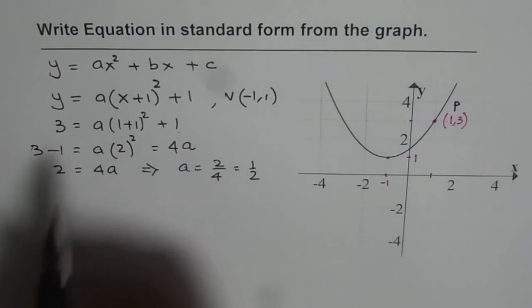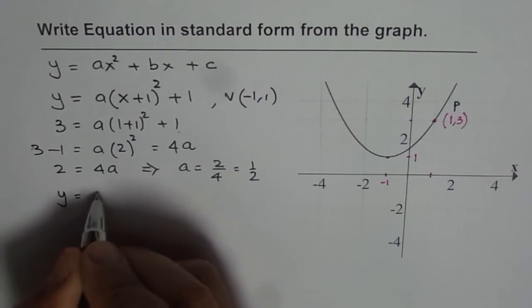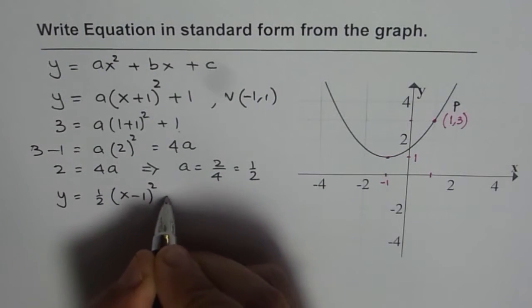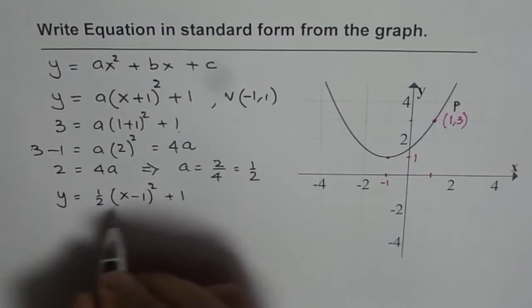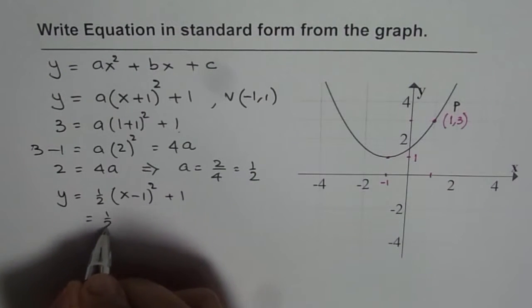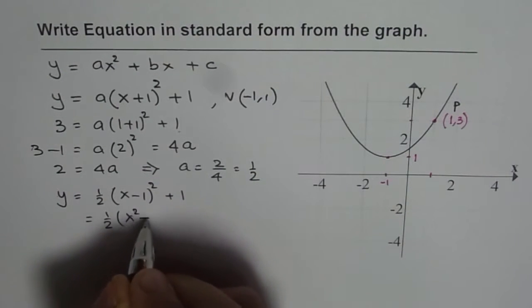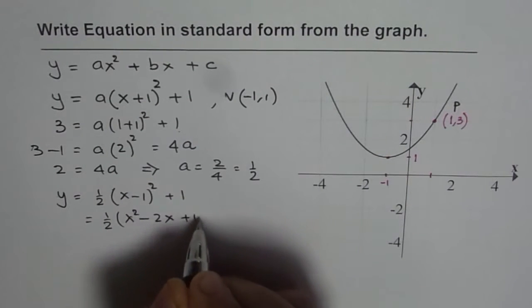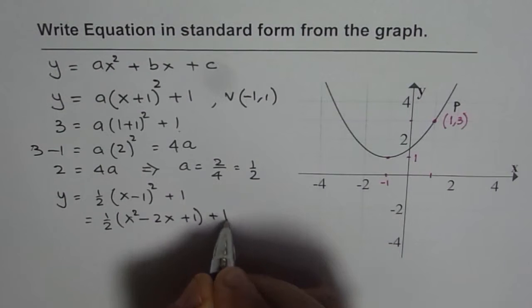So we can write down the equation as y equals half of (x - 1) whole square plus 1. Let us expand it. So if you expand it, you get half of (x squared minus 2x plus 1) plus 1.